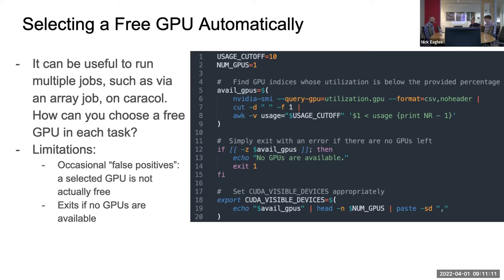The code checks which GPUs are under 10% utilization by default. You can change the two variables at the top — keep the utilization threshold at 10, and if you want to use more than one GPU, set the count to two. At the bottom, it sets the CUDA_VISIBLE_DEVICES variable based on which GPUs it determines to have less than 10% utilization.